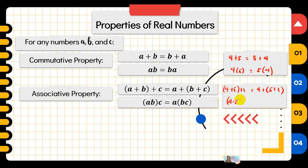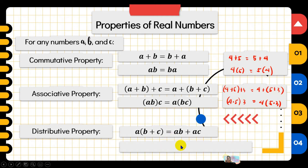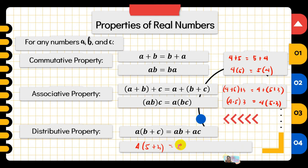Another is the distributive property, which we use quite often. The terms outside the parentheses are distributed to the terms inside. We multiply A by B and A by C, giving us A times B plus A times C. For example, if A is 4, B is 5, and C is 3: 4 times (5 plus 3) is 4 times 8, which is 32. Distributing: 4 times 5 is 20, and 4 times 3 is 12; 20 plus 12 is also 32. Those are the properties of real numbers: commutative, associative, and distributive.